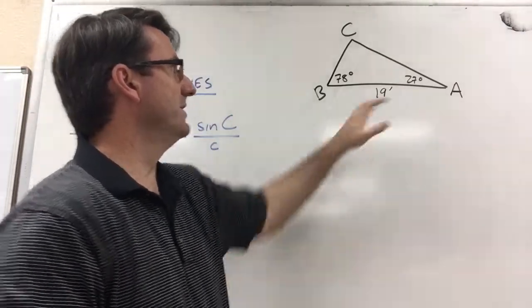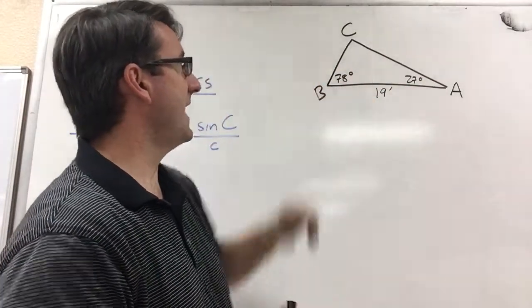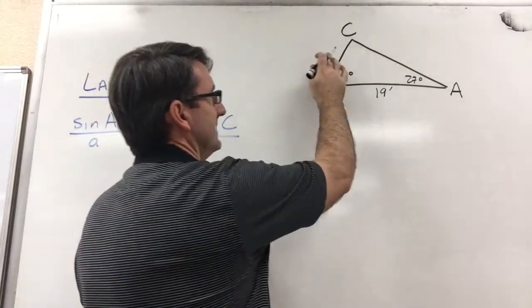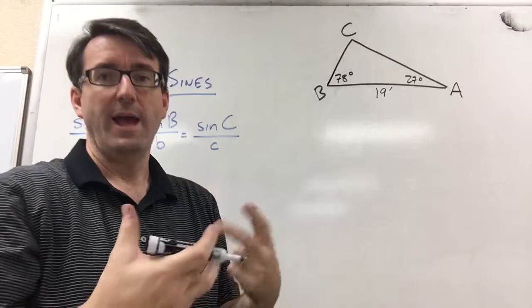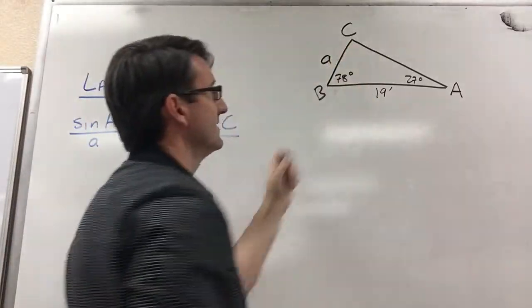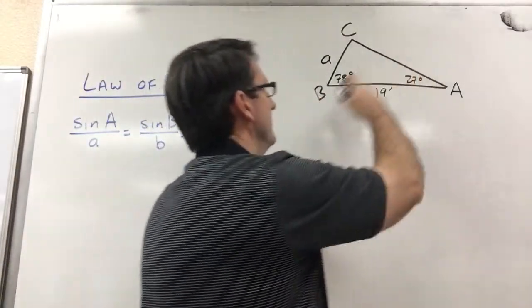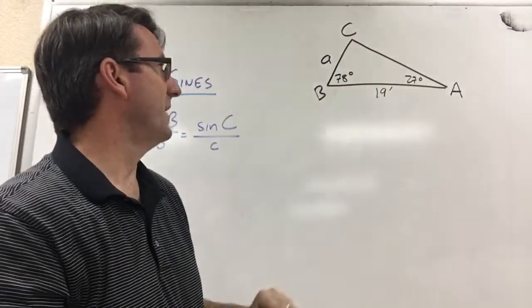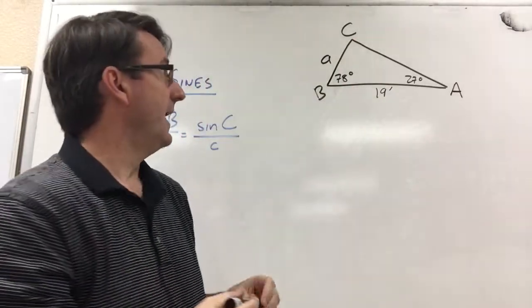So when you're labeling these triangles, the important thing to remember is that side little a is always directly across from angle capital A. So this is side A. That's what we're trying to find here. And little b would be across from angle B, and side C is directly across from angle C.